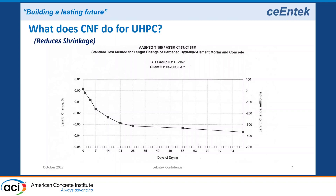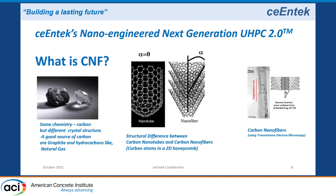I want to talk about shrinkage. Here is a graph of drying shrinkage at 90 days. The drying shrinkage with carbon nanofiber UHPC is about 360 microstrain at 90 days, which is about half of a typical UHPC. Not all UHPCs are the same — it's a family of products — but if you look at published data on typical UHPC, it's more than double 360 microstrain at 90 days. So the carbon nanofiber actually reduces the drying shrinkage.